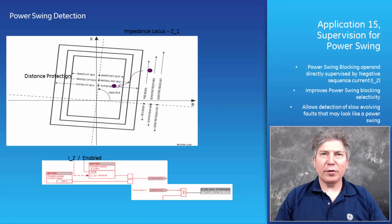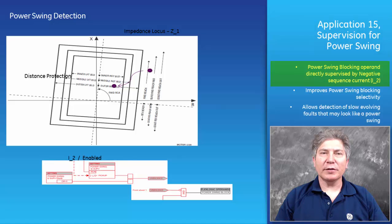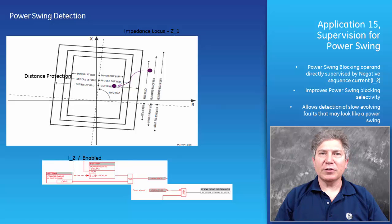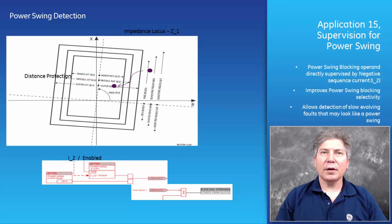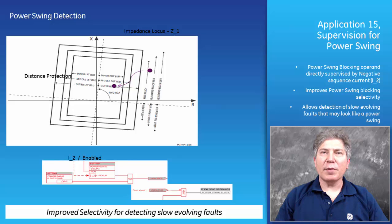Application 15: Supervision for a power swing. A new negative sequence current supervisor improves selectivity of the power swing element. The power swing element is generally used to ensure distance protection selectivity by blocking distance elements when the impedance locus enters a distance zone due to a power swing event. Since specific fault types can resemble a power swing event, the power swing element has been changed to be supervised by negative sequence current. This supervisor prevents operation of the power swing element when negative sequence current exceeds a pickup value, detecting slow evolving faults that may look like a power swing.